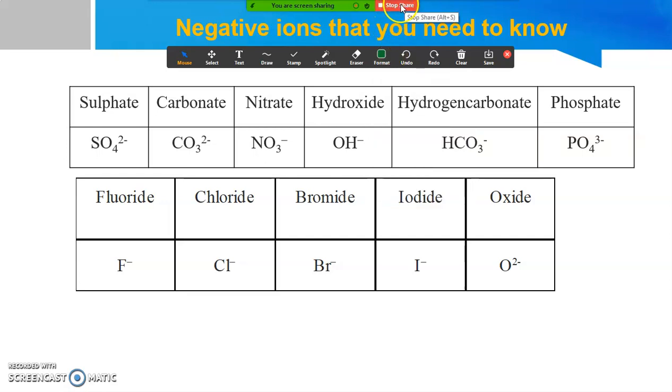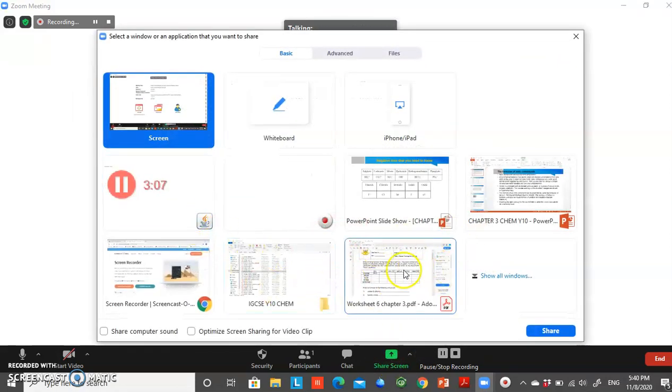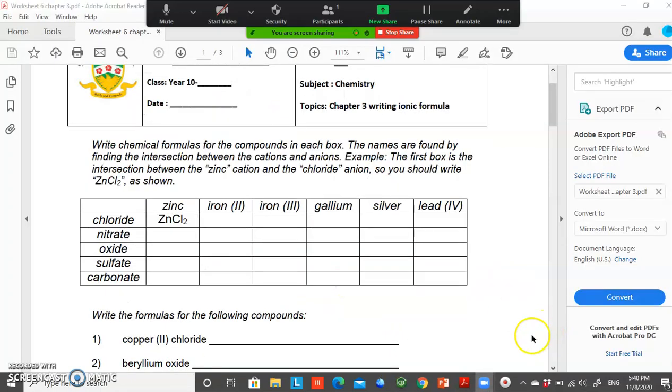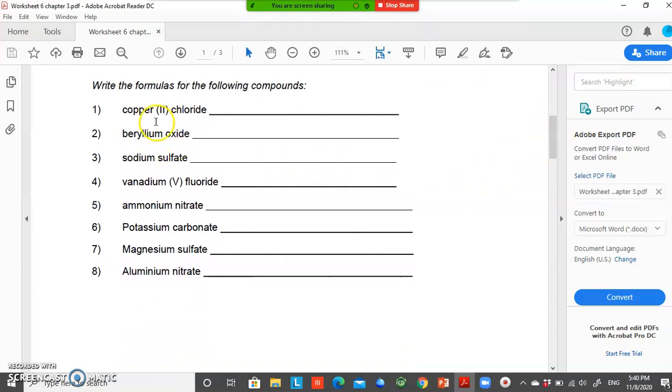Now let's look at one of the examples. Here I have questions regarding writing the ionic compound formula. You have here copper(II) chloride. In order to write the chemical formula for copper(II) chloride, you need to know the ionic formula of that particular element.